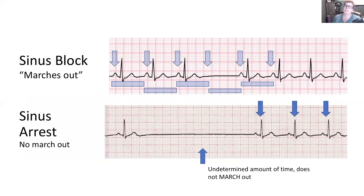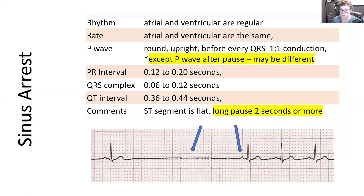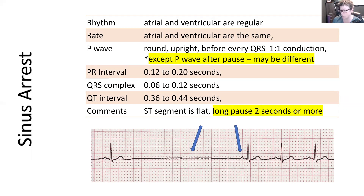The key differentiating feature between sinus block and sinus arrest is that sinus arrest does not march out — it's an undetermined amount of time, and then it picks up into its rhythm. For sinus arrest, everything in the parameters is normal with the exception that the P wave post-resumption of electrical activity may or may not be round and upright, and the pause is longer than two seconds. Count how many boxes and do the math.